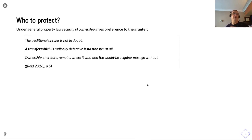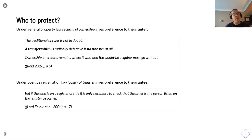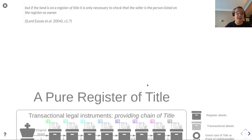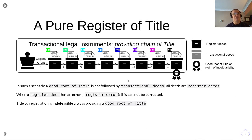Under general property law, security of ownership gives preference to the grantor. As Reed states, a transfer which is radically defective is no transfer at all; ownership therefore remains where it was and a would-be acquirer must go without. Under positive registration law, facility of transfer gives preference to the grantee. If the land is on a register of title, it is only necessary to check that the seller is the person listed on the register as the owner. In a pure register of title, there is no chain of transactional deeds — all deeds are register deeds. When a registered deed has an error, this cannot be corrected. Title by registration is indefeasible, always providing a good root of title.